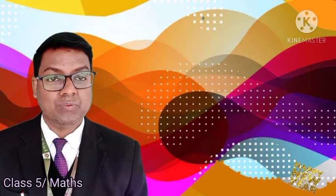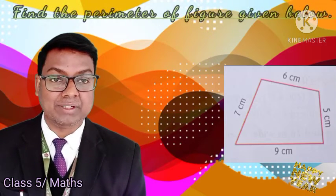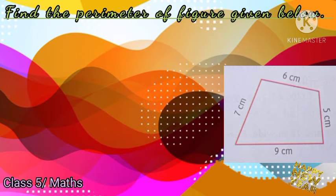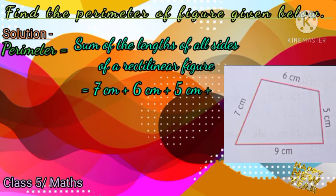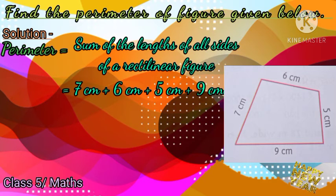Let us see an example related to the perimeter of a rectilinear figure. Find the perimeter of the figure given below. We have a quadrilateral figure where we have to find the perimeter. Perimeter is equal to the sum of the length of all sides. Adding all four sides: 7 cm plus 6 cm plus 5 cm plus 9 cm equals 27 cm. Therefore, the perimeter of the figure is 27 cm.